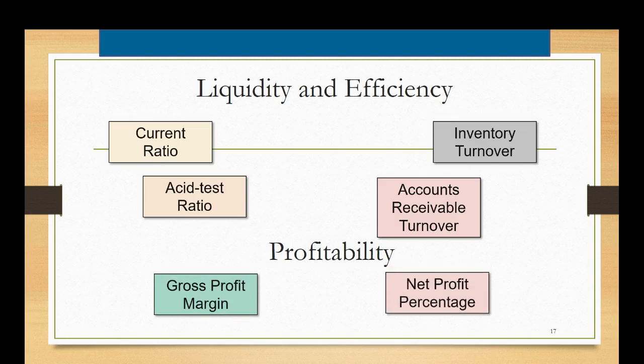The four liquidity ratios that you're going to be calculating are the current ratio, the acid test ratio, the inventory ratio, and the accounts receivable turnover. These four ratios help evaluate whether the company has short-term liquidity issues or not. That means do they have the financial wherewithal to meet their current obligations as they come due.